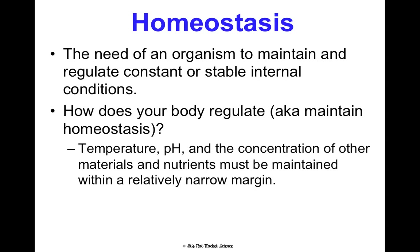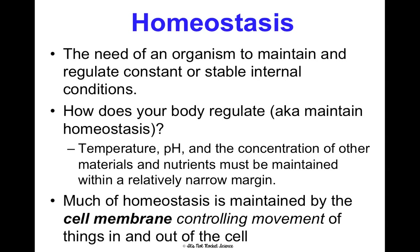Your body does a lot of this without you even thinking about it. If your body's too hot, you sweat in order to cool your body temperature down. We're going to talk through the six types of cellular transport that help maintain this, because the cell membrane is so critical in controlling what goes in and out of your cell, which affects homeostasis and how your internal environment is being maintained and regulated.